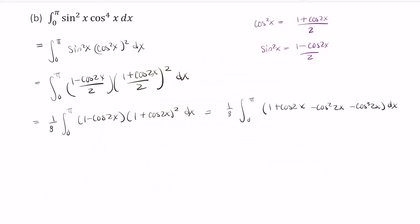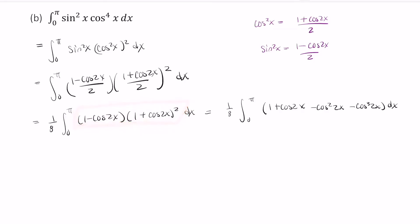Now that you've paused the video, when you multiplied 1 minus cosine 2x times 1 plus cosine 2x squared, you should have: 1 plus cosine 2x minus cosine squared 2x minus cosine cubed 2x.